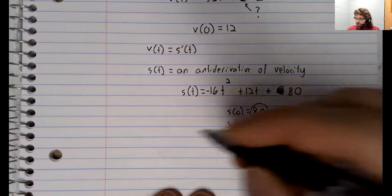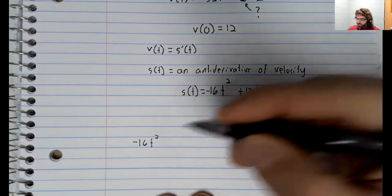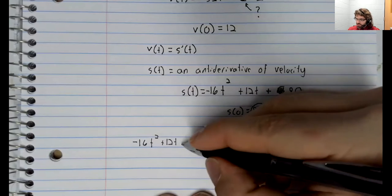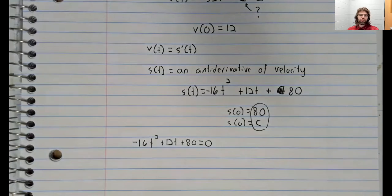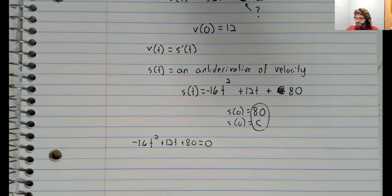And when does the object hit the ground? Well, it hits the ground when the height is zero. And since this is a calculus class, and also because I am running out of space, we'll assume that you can set a quadratic equal to zero. This doesn't factor or do anything fancy like that.